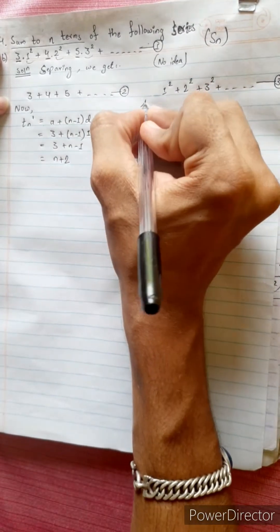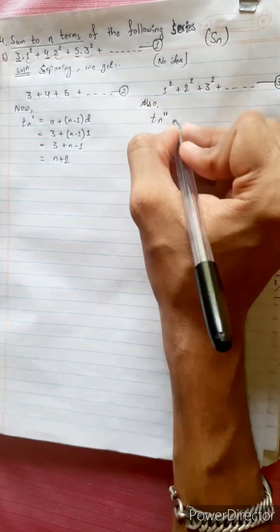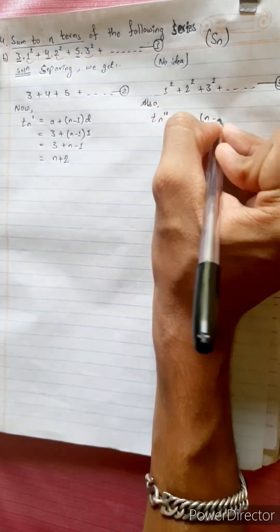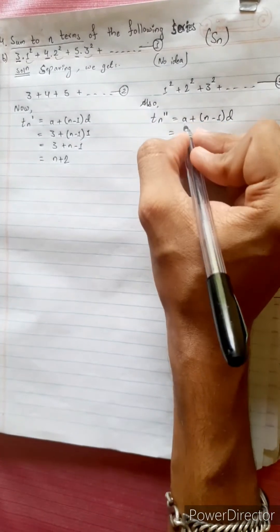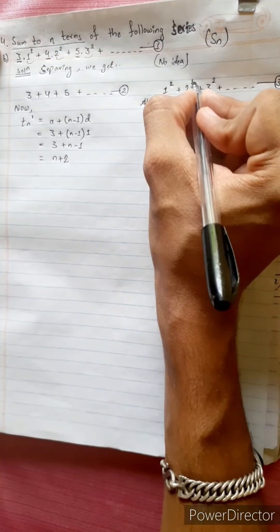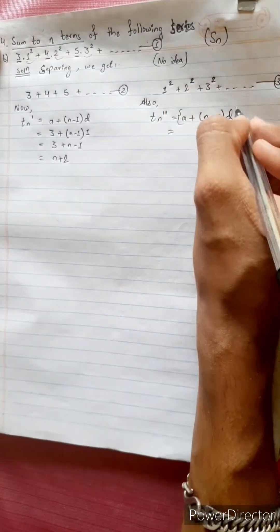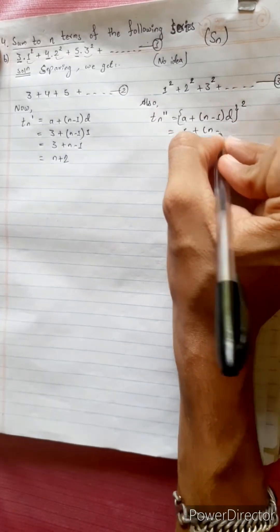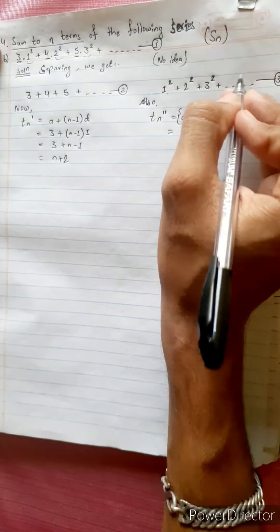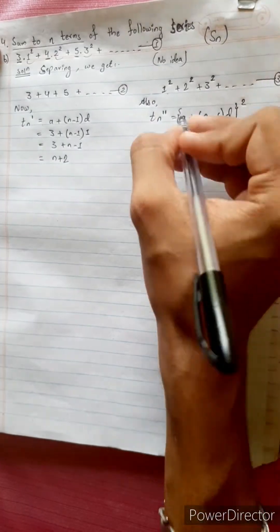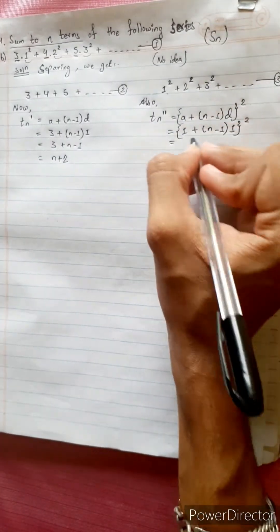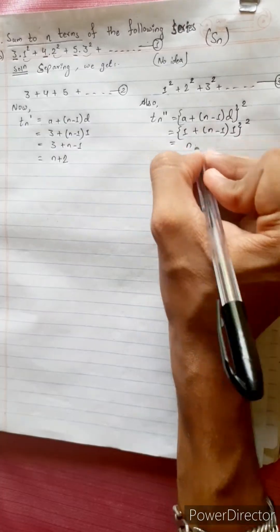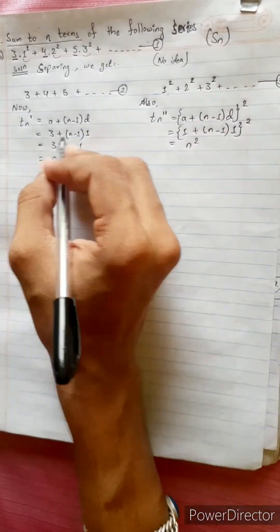Now tn', again tn' formula a plus n minus 1 d. a₁ equals 1, e square. a₁ equals 1 plus n minus 1, 1, 2, 3, 4, 5, difference 1. n minus 1, n squared.